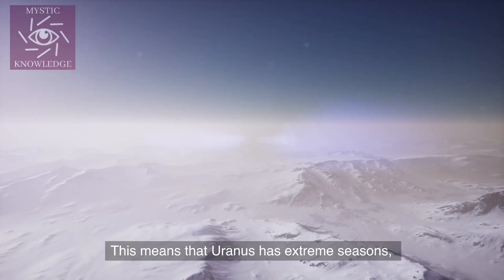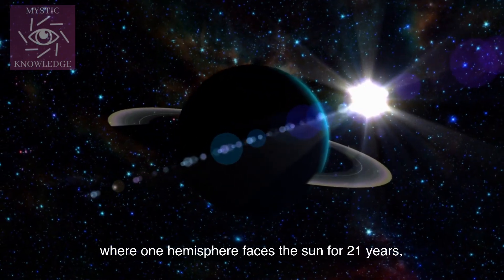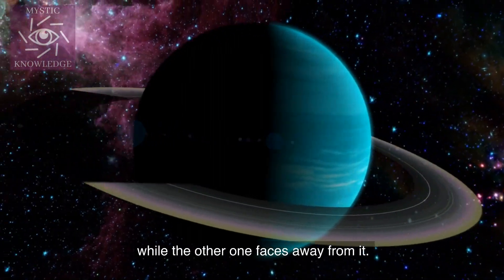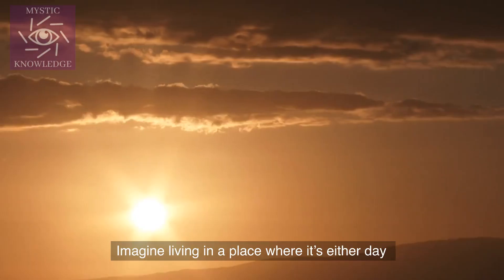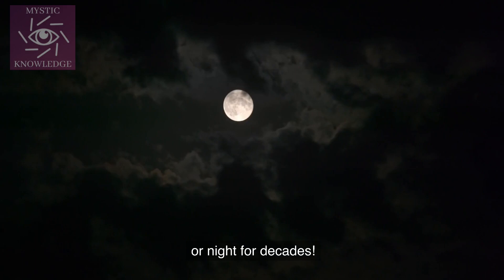This means that Uranus has extreme seasons, where one hemisphere faces the sun for 21 years, while the other one faces away from it. Imagine living in a place where it's either day or night for decades.